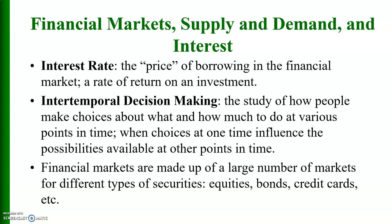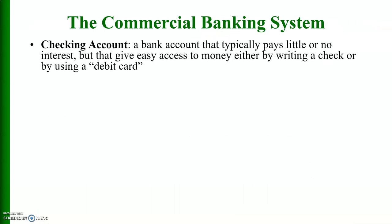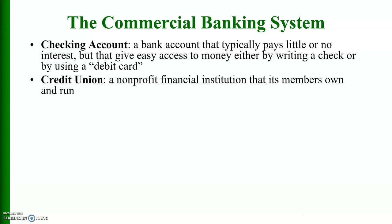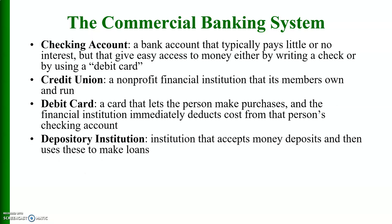Financial assets including equities, bonds, and credit cards are substitutes for one another. A checking account is a bank account that typically pays little or no interest but gives easy access to money, either by writing a check or using a debit card. A credit union is a non-profit financial institution that its members own and run. A debit card lets a person make purchases and the financial institution immediately deducts the cost from that person's checking account. A depository institution accepts money deposits and uses these to make loans.